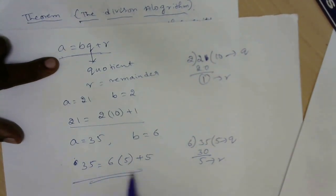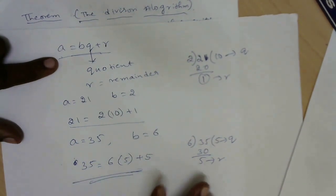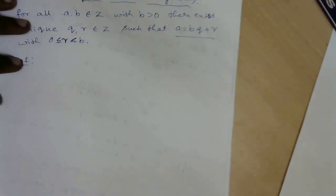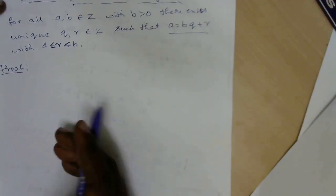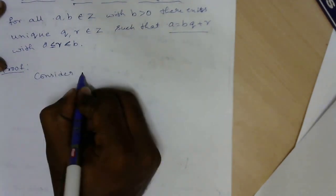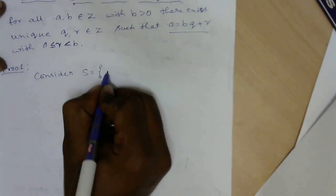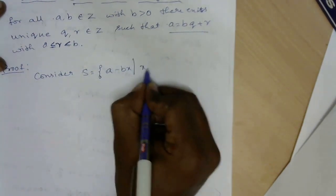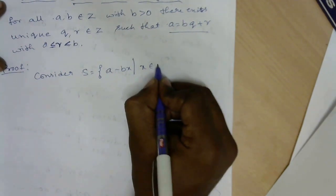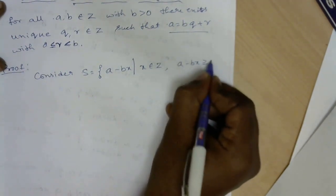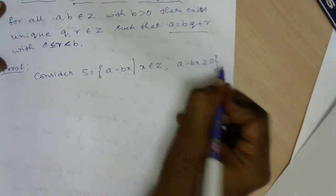Now we will write the general proof. Consider the set S equals {a minus bx such that x belongs to Z and a minus bx is always greater than or equal to 0}.